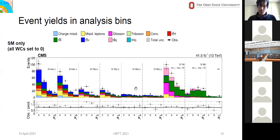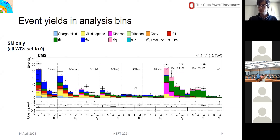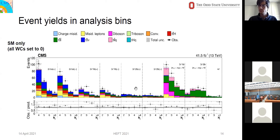I was wondering if you plan any improvements for the full Run 2 update of the analysis. Yes, there are several. The most important is that we want to examine differential distributions, which will give us a lot more sensitivity, and of course the extra data will provide additional sensitivity. We're also including additional operators: four-quark operators — about eight additional operators, two heavy and two light, plus four-top sensitivity — which will be included in our future analysis.